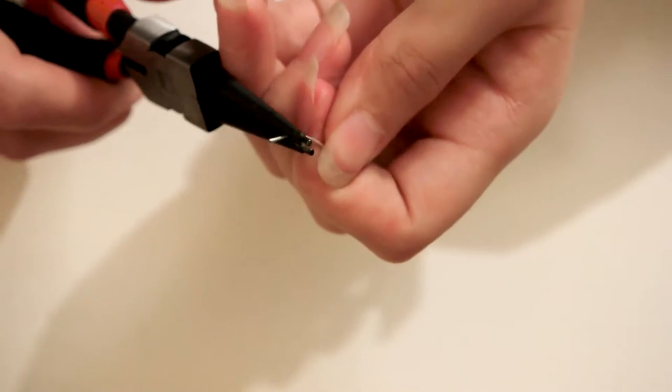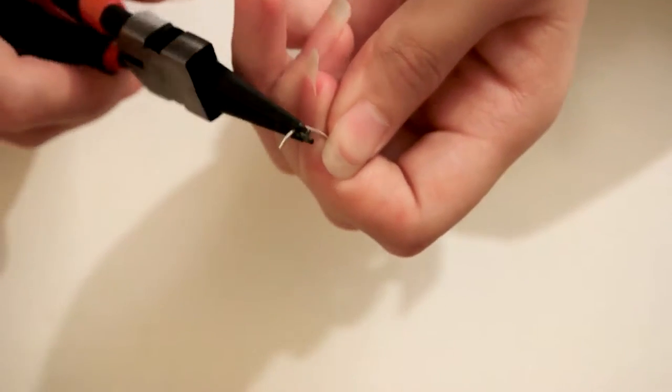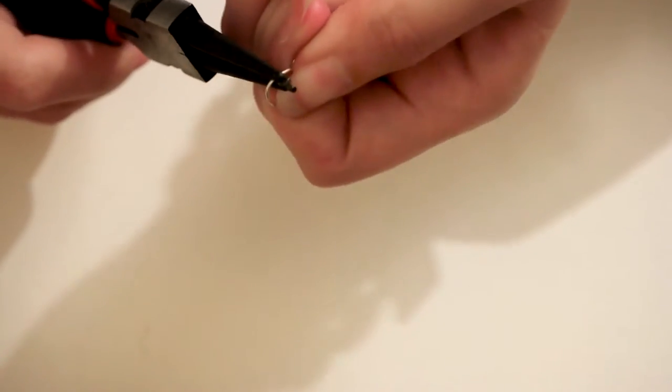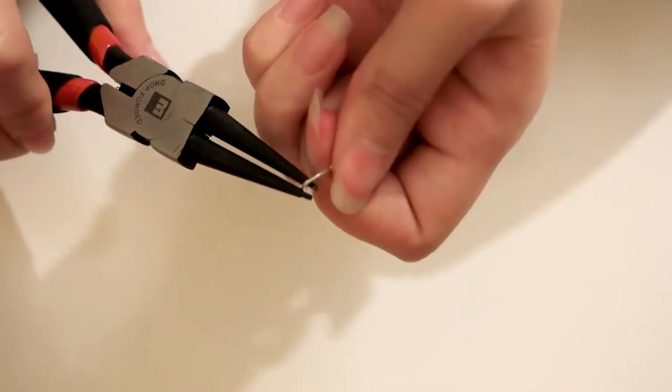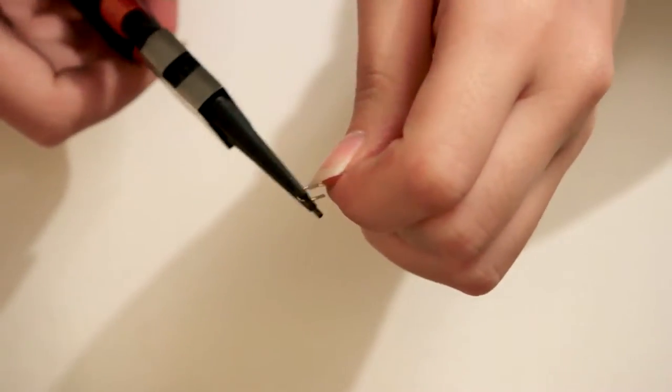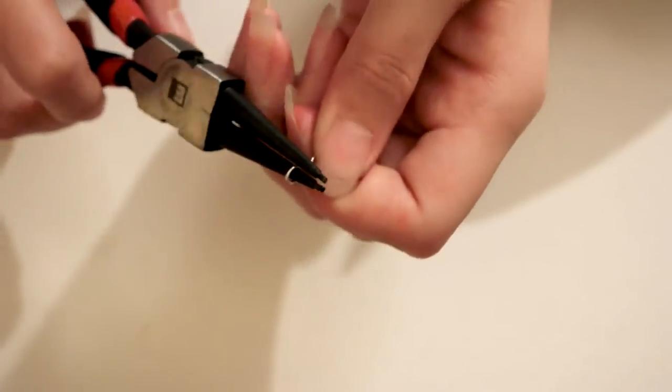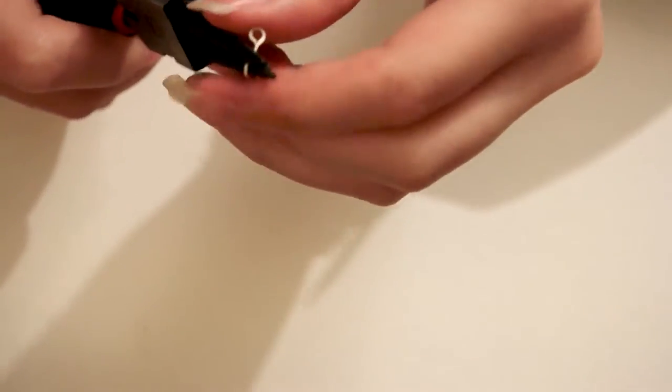Now I'm taking the needle nose pliers to create a loop in the opposite direction. The final outcome should look something like an S. And if you're using an earring dangly like I did for the main piece, you can also use the fish hook part that comes with the earrings to do this.